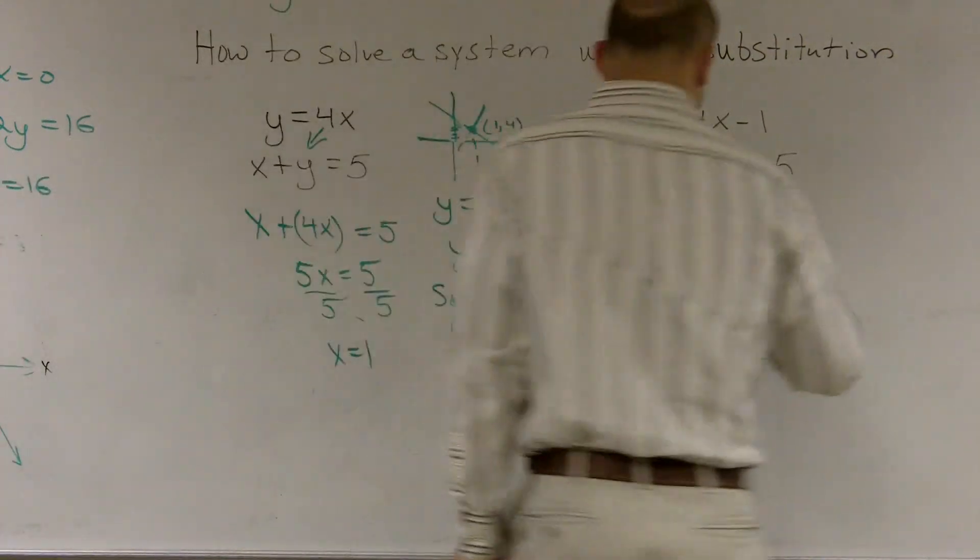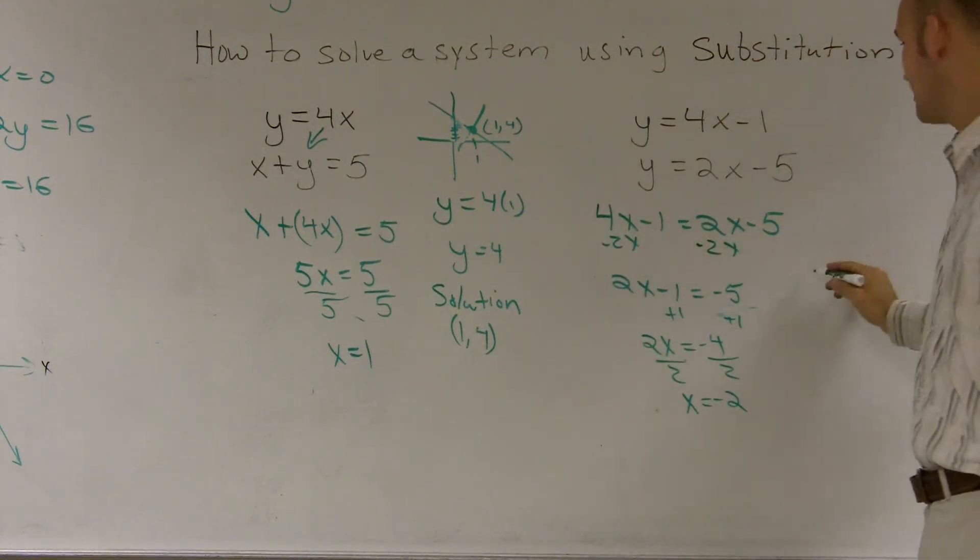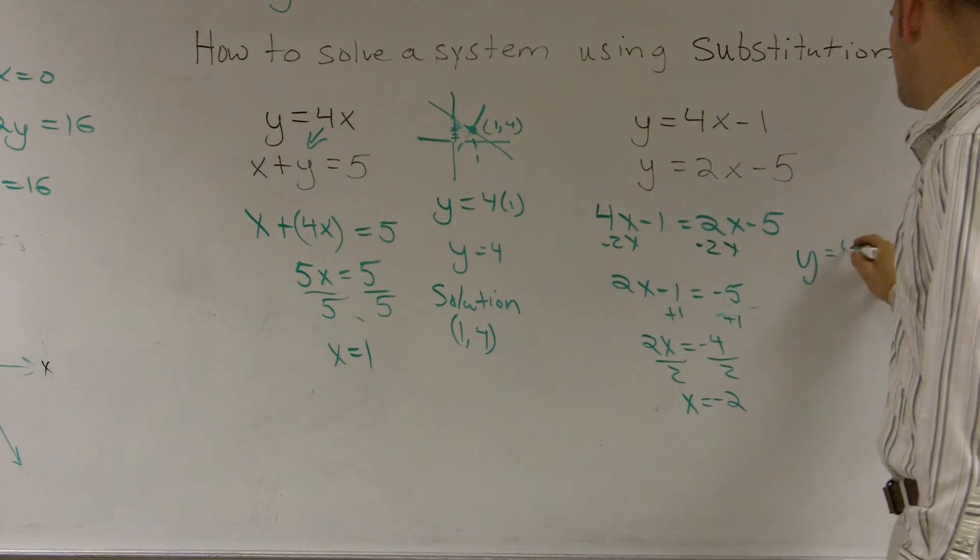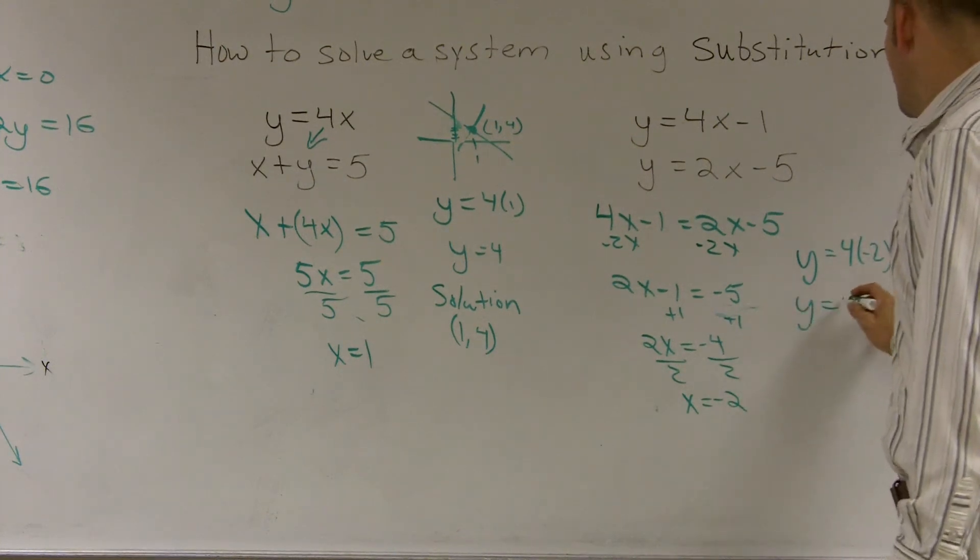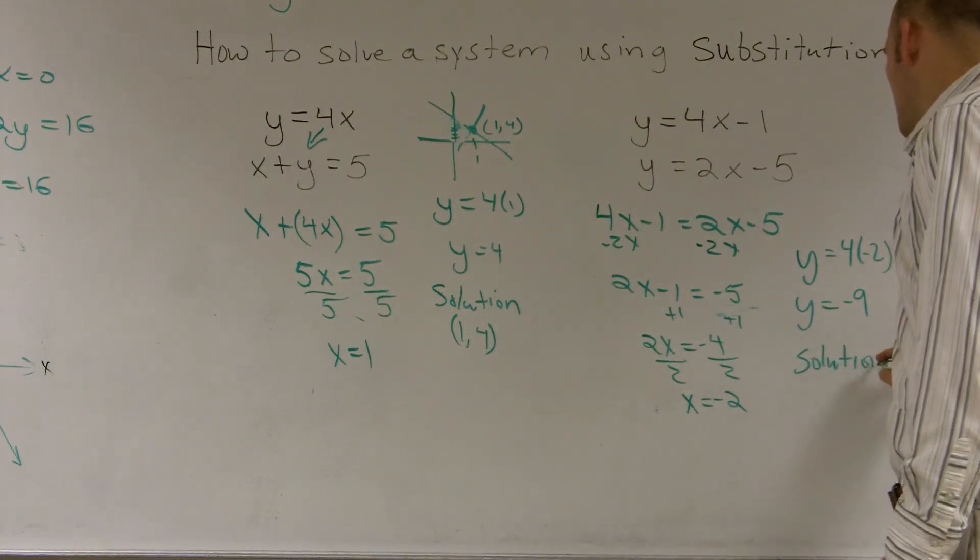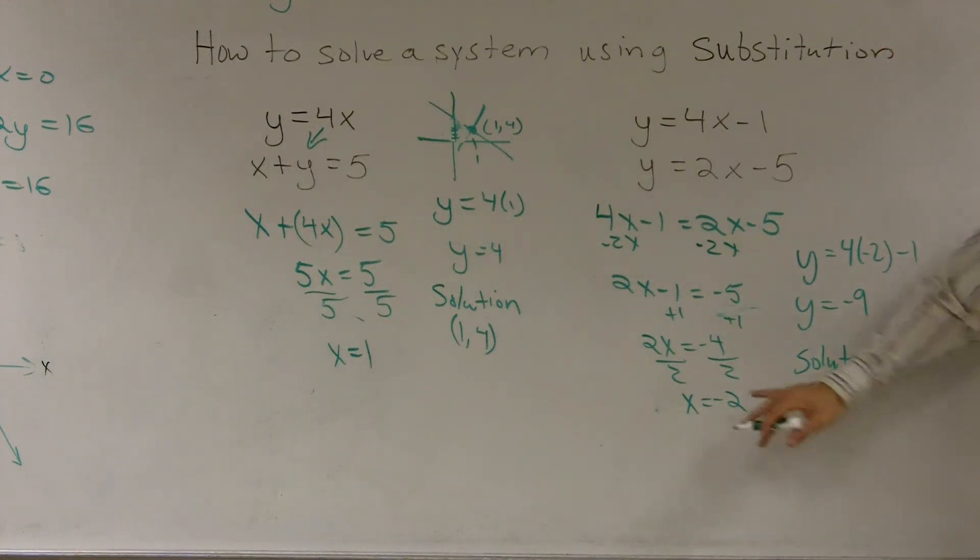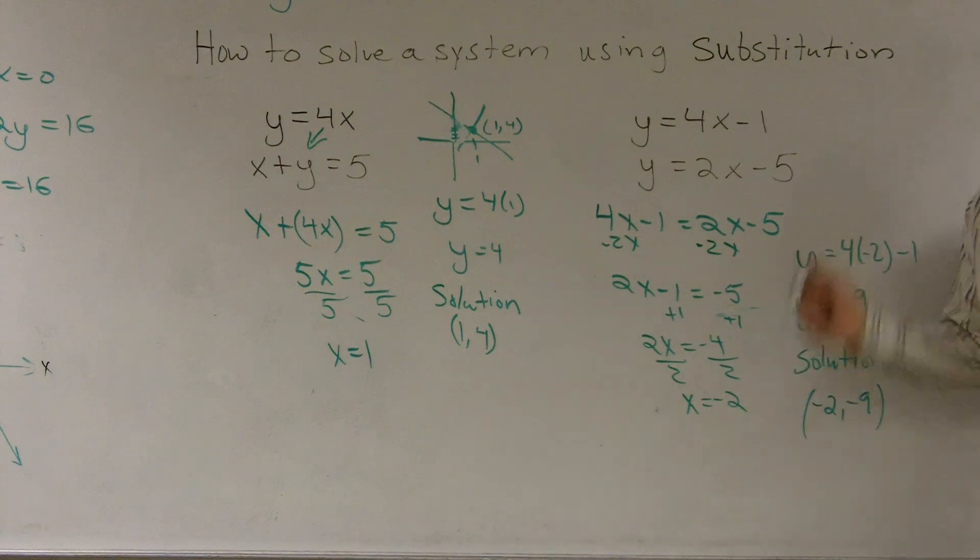To find the y, I plug in a negative 2. It does not matter which equation you plug it into. y equals 4 times negative 2 minus 1, y equals the negative 9. So therefore, then you can say the solution is at negative 2, negative 9. And that is also where the two lines would graph or would intersect with your graph. And that's how you solve the system using substitution.